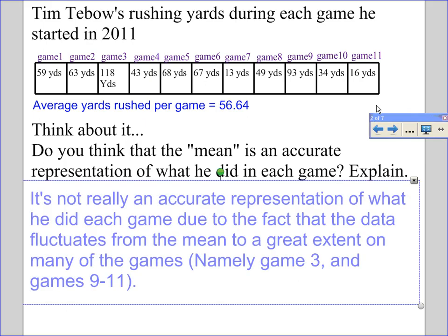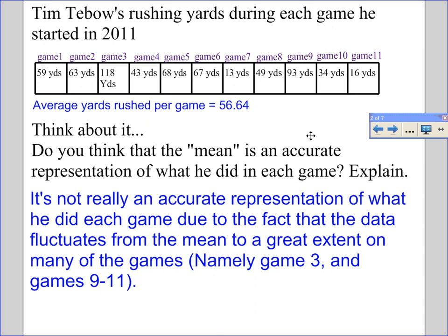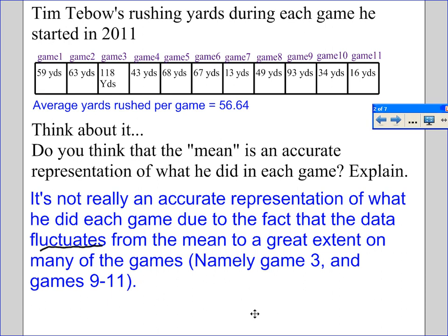The question is basically asking: is the mean an accurate representation of what he did in each game? The answer is it's not really an accurate representation due to the fact that the data fluctuates from the mean to a great extent on many of the games, namely Game 3 and Games 9 to 11. If you look at Game 3, he rushed for 118, but his average is 56.64 — that's a great fluctuation. So the mean is not really an accurate representation of what he did each game.